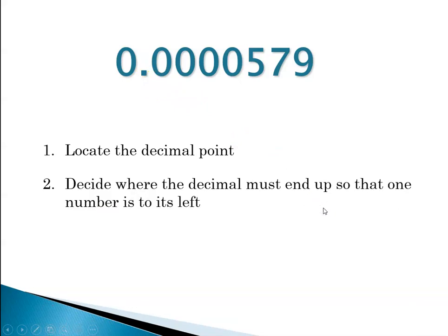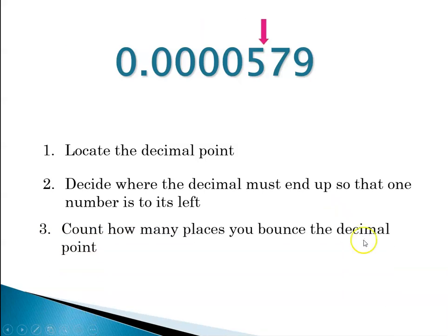How about a really small number? So in this case we're going to step one: locate the decimal point. There it is. Step two: decide where it must end up so that there's only one digit to its left, that's between the five and the seven. And now count how many places you bounce your decimal point. So 1, 2, 3, 4, 5.